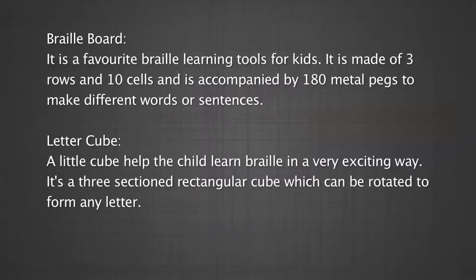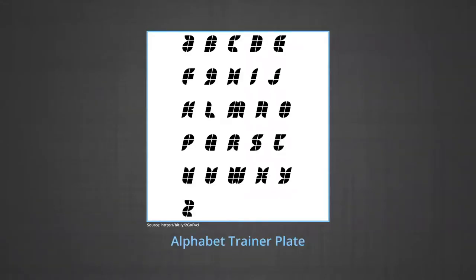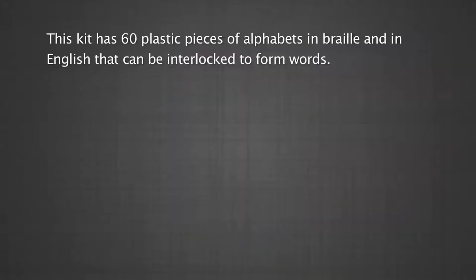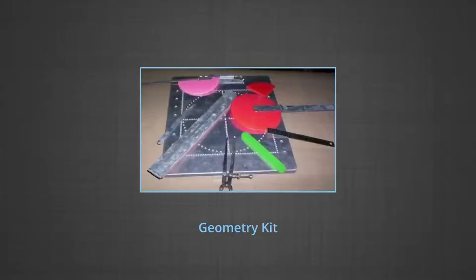Braille board: A favorable Braille learning tool for kids, made of three rows and ten cells, accompanied by 180 metal pegs to make different words or sentences. Letter Cube: A small three-sectioned rectangular cube which can be rotated to form any letter, helping children learn Braille in an exciting way. Word Forming Block: A plastic piece of block to make children learn five or eight letter words. Alphabet Trainer Plate: A plastic plate which has Braille letters embossed and English letters engraved. Word Building Kit: Sixty plastic pieces of alphabets in Braille and English that can be interlocked to form words.